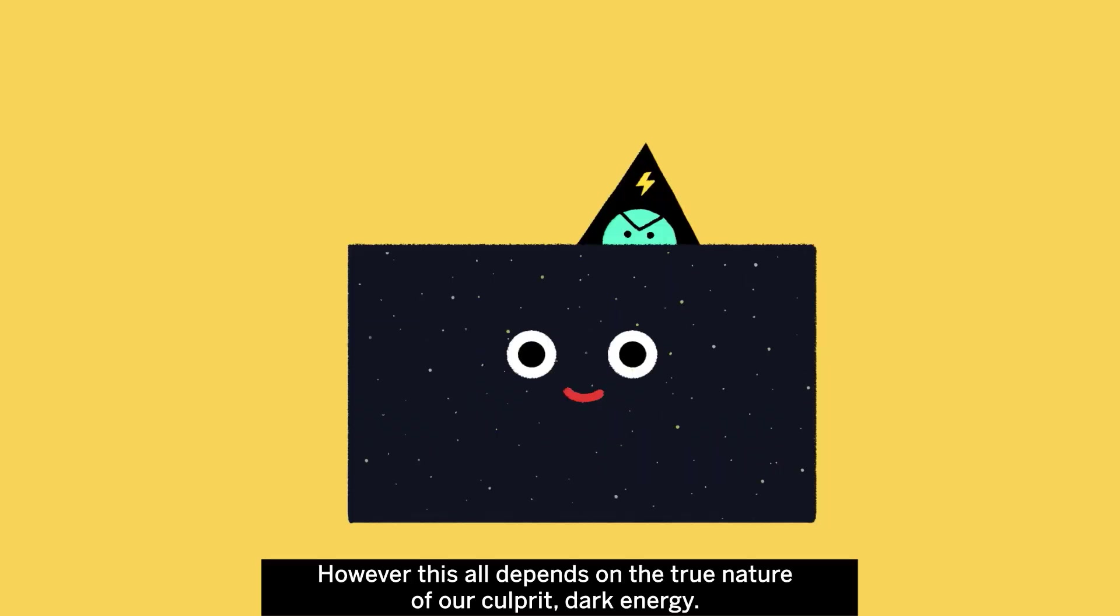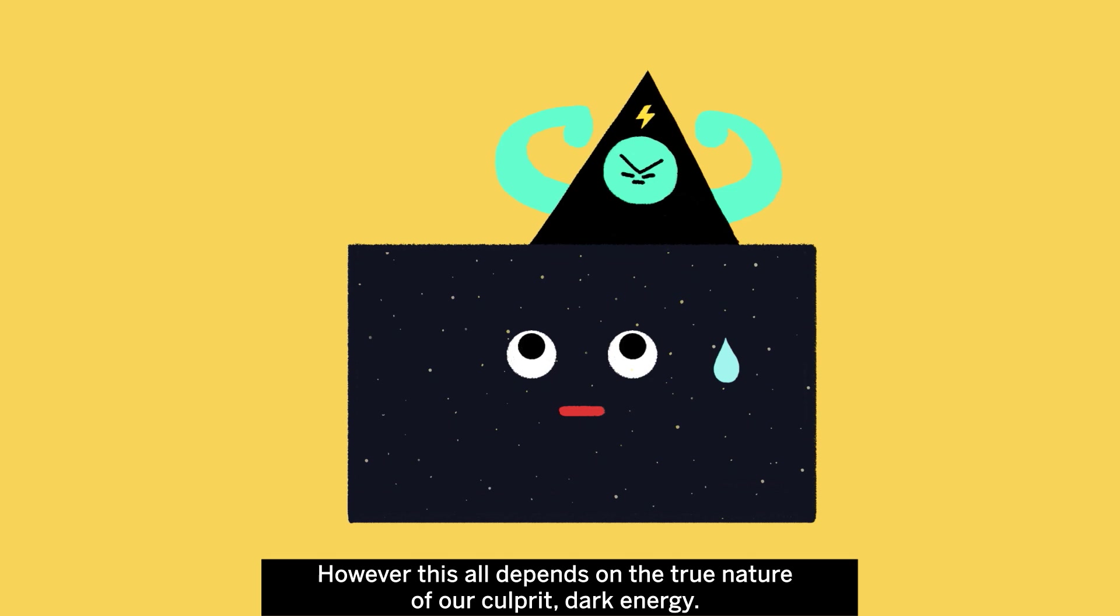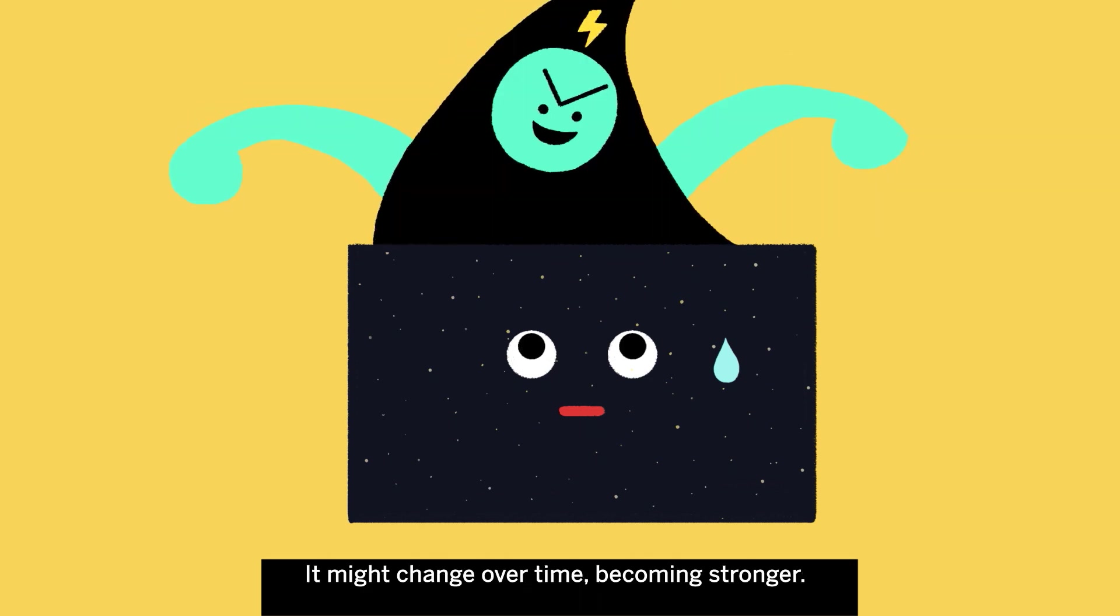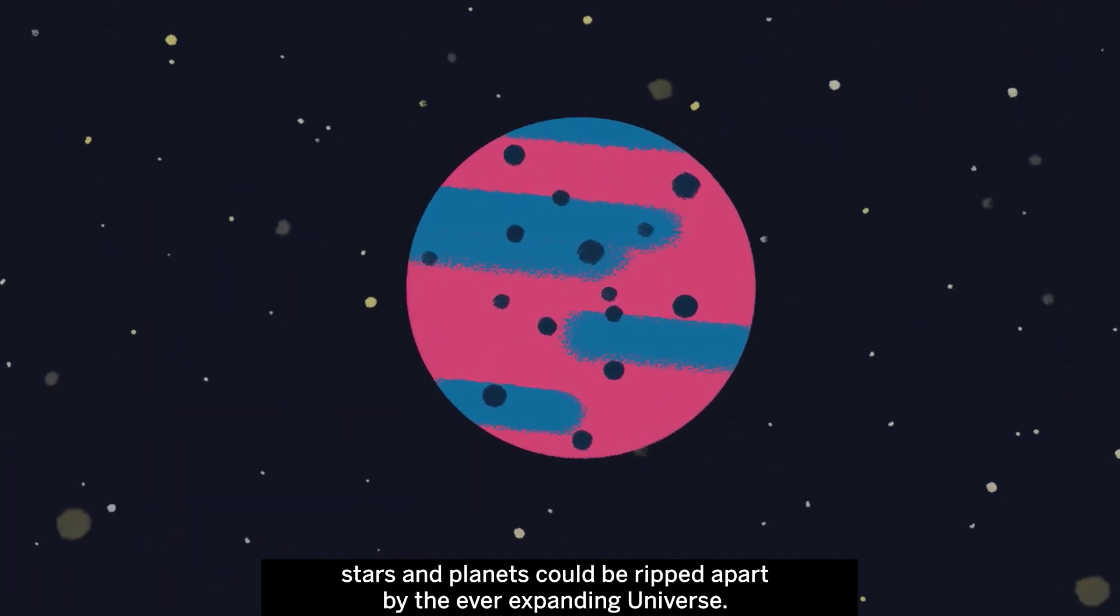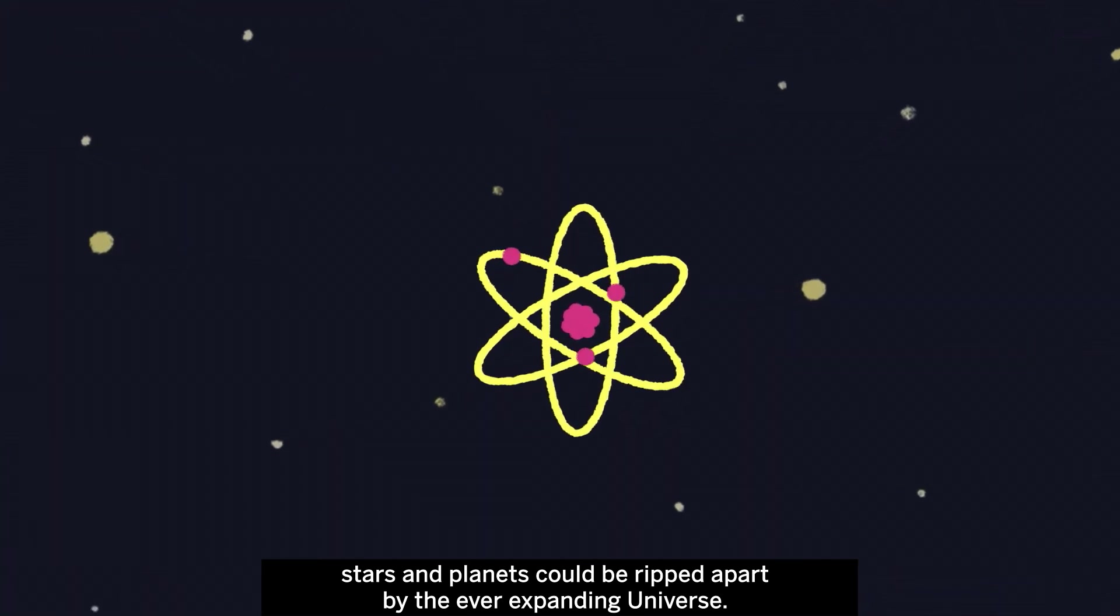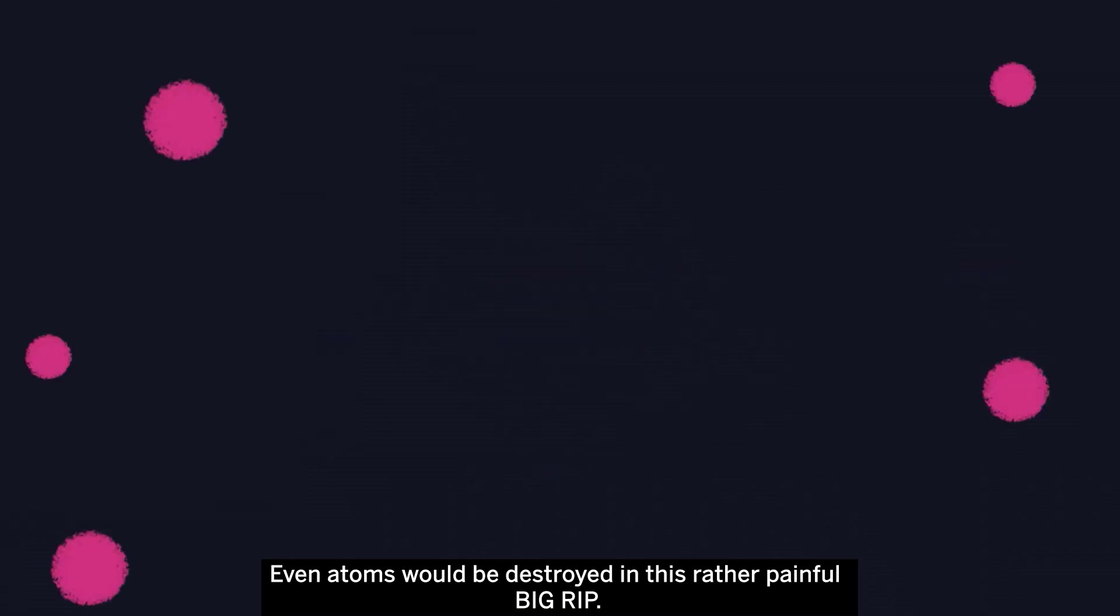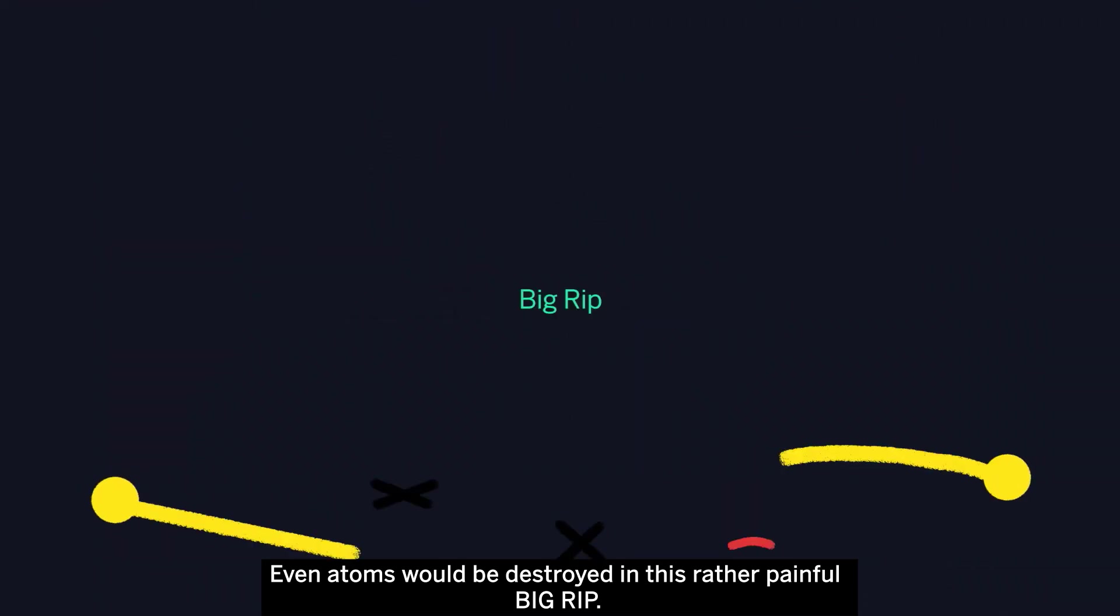However, this all depends on the true nature of our culprit, dark energy. It might change over time, becoming stronger. Billions of years into the future, stars and planets could be ripped apart by the ever-expanding universe. Even atoms would be destroyed in this rather painful big rip.